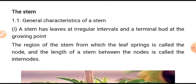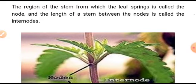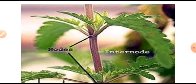A stem has leaves at irregular intervals and terminal buds at the growing point. The region of the stem from which a leaf springs is called the node. The length of stem between nodes is called the internode, as you see here in this figure.